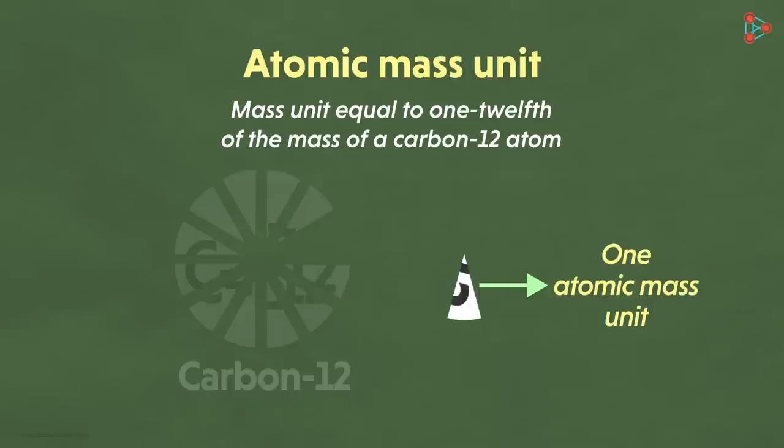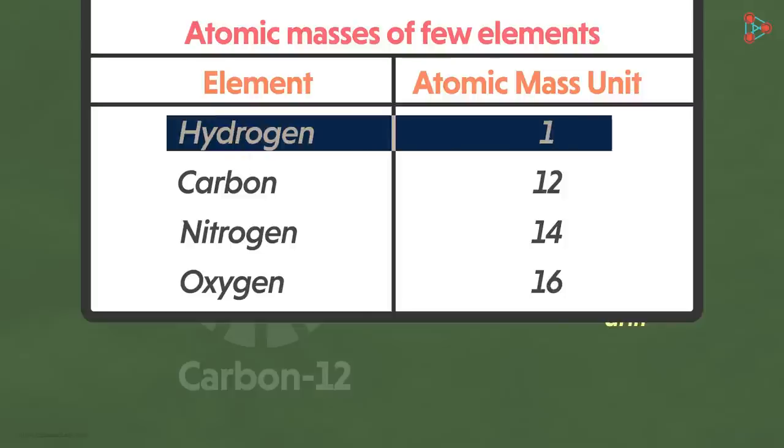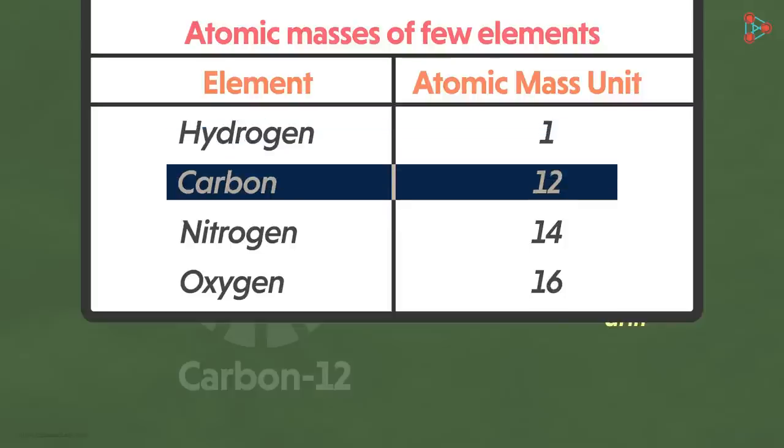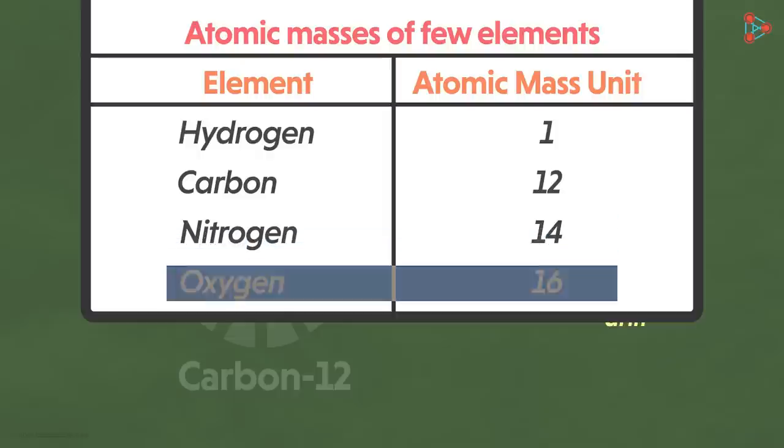And this is used as a standard to calculate the atomic mass of any other atom. Some examples of this would include the atomic mass unit of hydrogen being 1, carbon being 12, nitrogen being 14, oxygen being 16 and so on.